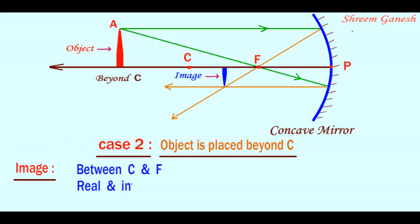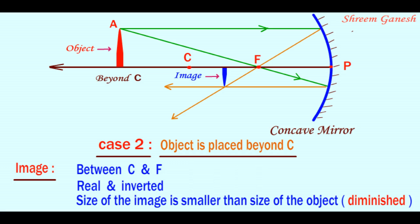Second, the image is real and inverted. Third, the size of the image is smaller than size of the object, or as you can see, the image is diminished.